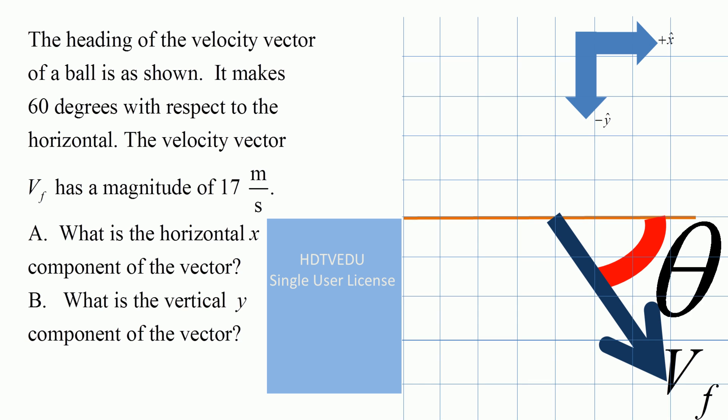The heading of the velocity vector of a ball is as shown. It makes 60 degrees with respect to the horizontal. The velocity vector Vf has a magnitude of 17 meters per second. What is the horizontal component of the vector?